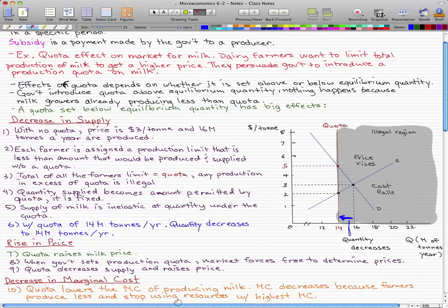But this will cause another effect to happen. This quota that the government set will raise the price of milk. We'll just reflect that in this graph here. Let me change colors. We reflect it with this big arrow. From a price of three, the price rises to five dollars per ton. So when the government sets the production quota, the market forces are free to determine prices, and the quota decreases supply and raises price.